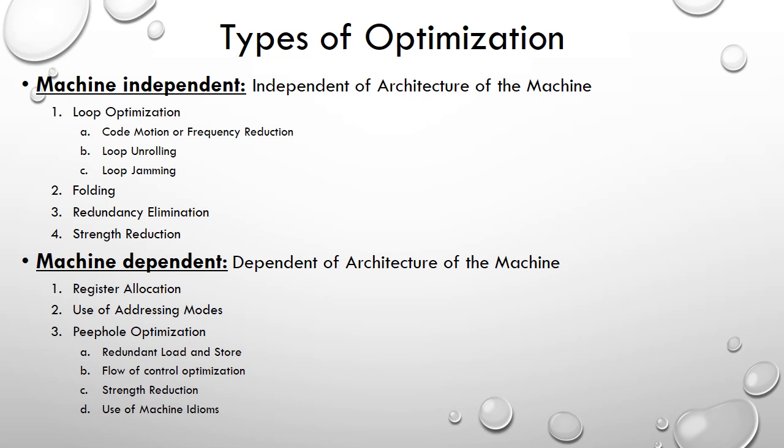In machine-independent optimization we have four techniques: loop optimization, folding, redundancy elimination, and strength reduction. In machine-dependent optimization we have three techniques: register allocation, use of addressing modes, and peephole optimization. We shall discuss all these techniques in the subsequent slides.